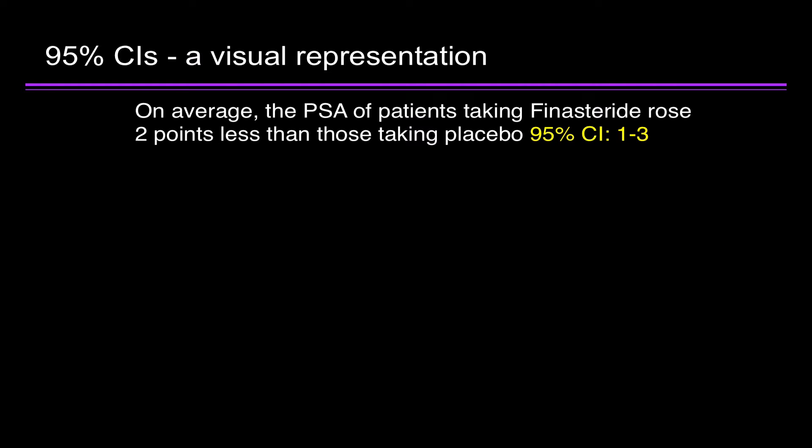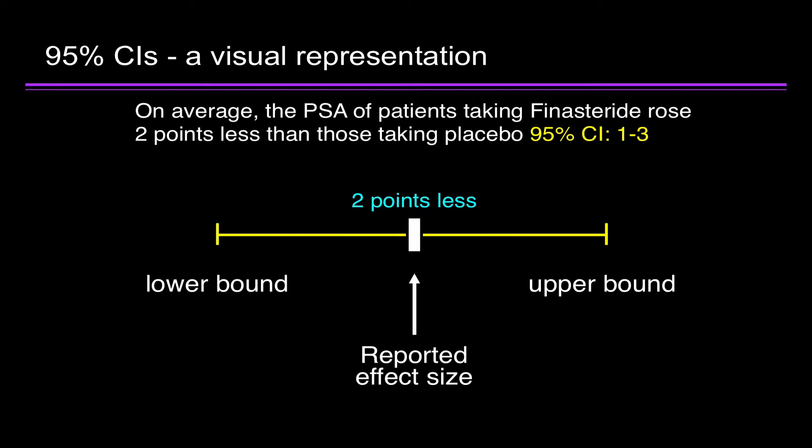We like to visualize 95% CIs, and they're typically drawn this way. The reported effect size has shown us a box, two points less. That was the main estimate from the study. But there's a margin of error. There's a lower bound to that margin and an upper bound. The lower bound is one point less. The upper bound is three points less. And the truth is somewhere in this range.